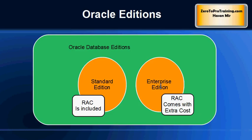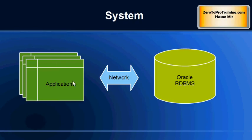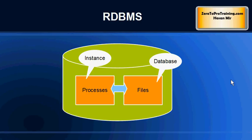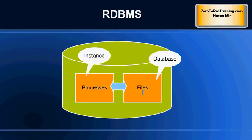Here is a typical scenario: you have one or more applications talking over the network to an Oracle relational database management system. When we say an application is talking to an Oracle database management system, you can break that database management system into two main components: the instance and the database.